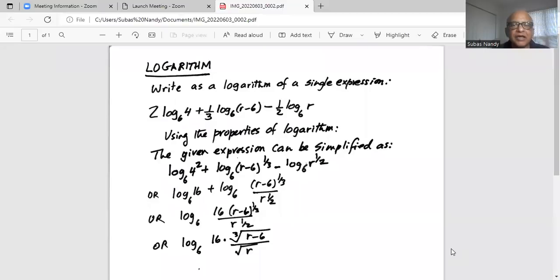So today we are going to work on a problem on logarithmic expression. We have a complicated expression and we want to write it as a logarithm of a single expression applying the rules of logarithm. So the problem is the first term is 2 multiplied by logarithm of 4 base 6, next one plus one third multiplied by logarithm of r minus 6 base 6, and then the next term is minus half logarithm of r base 6.